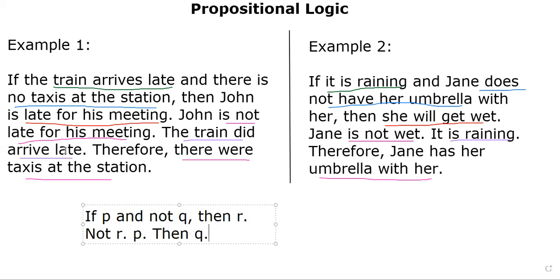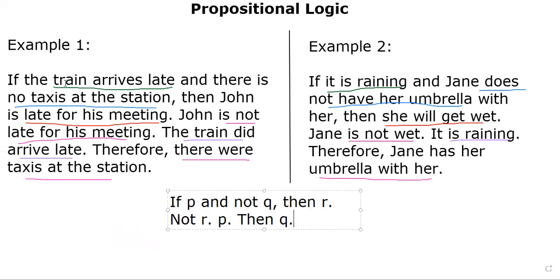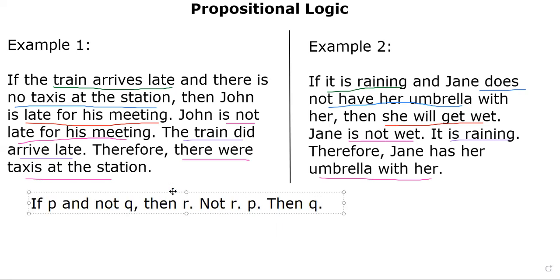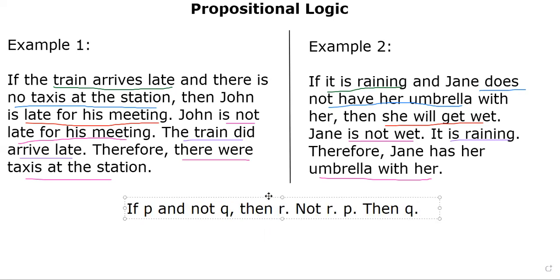So, if we abstract using symbols like I modeled, p stands for either train arriving late or it is raining on the right hand side. If you look at it like this using abstract symbols, we can conclude both examples are the same. You can instantiate the left hand side with p being train arriving late, q being taxis at the station, r is late for his meeting. John is not late for his meeting, that's the reason I put not r. The train did arrive late. That means p is true. Then we can conclude there were taxis at the station for the left hand side.